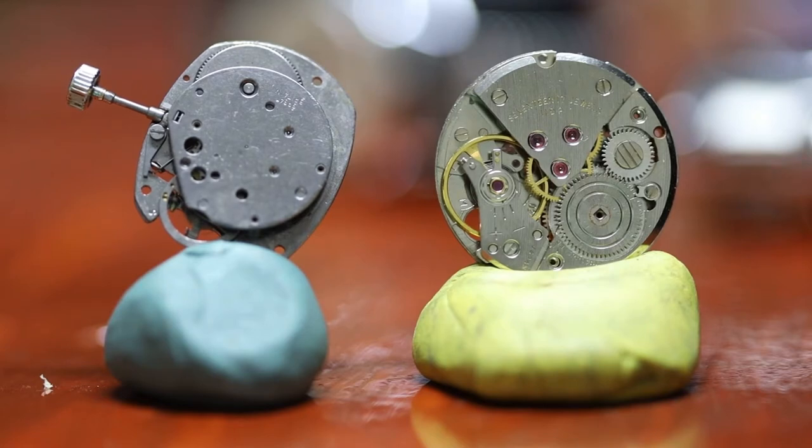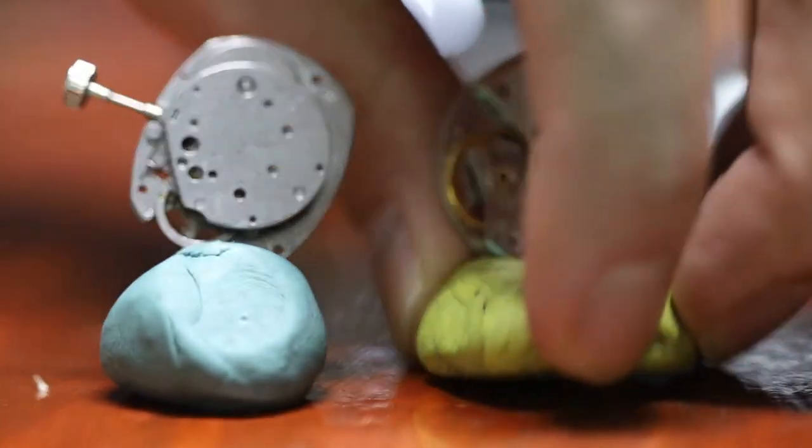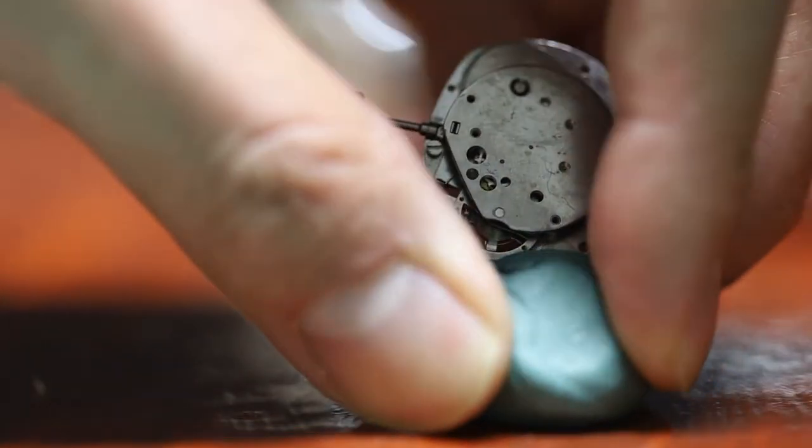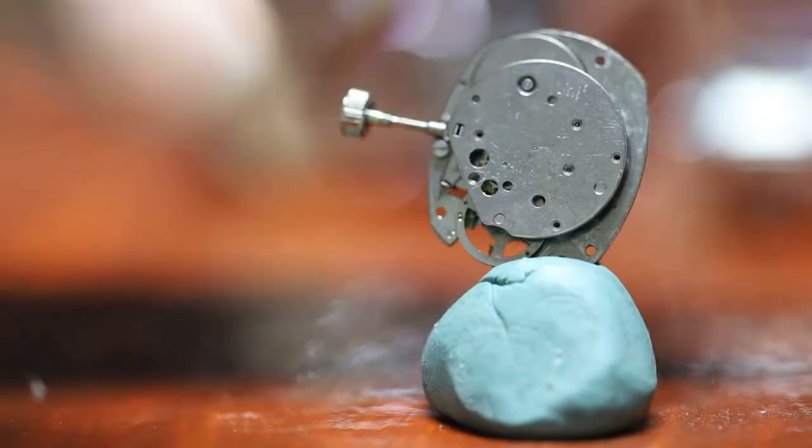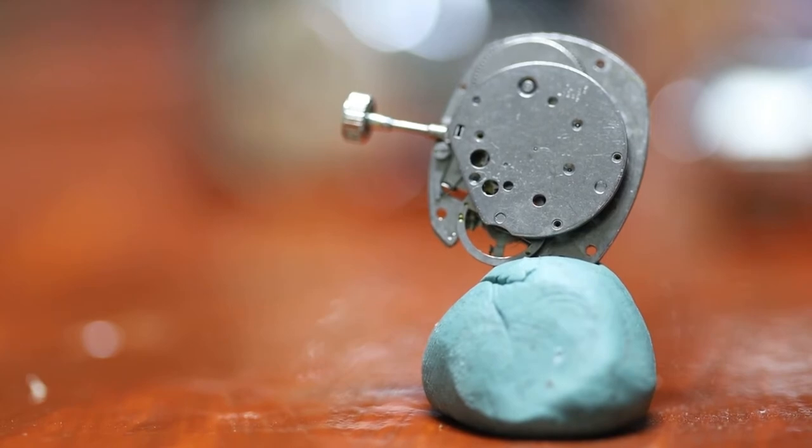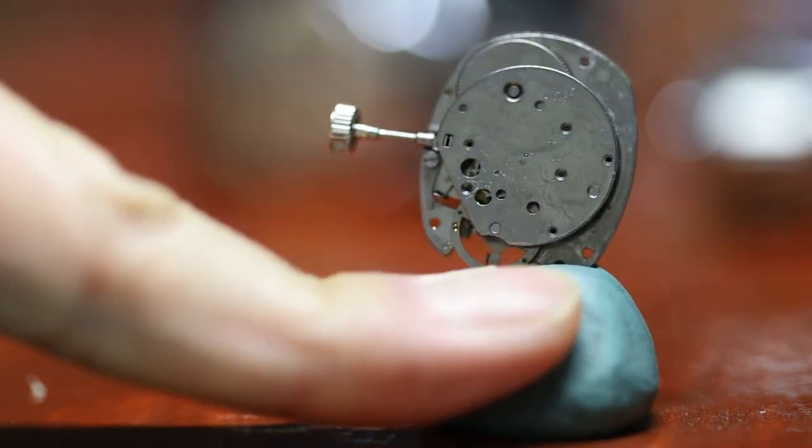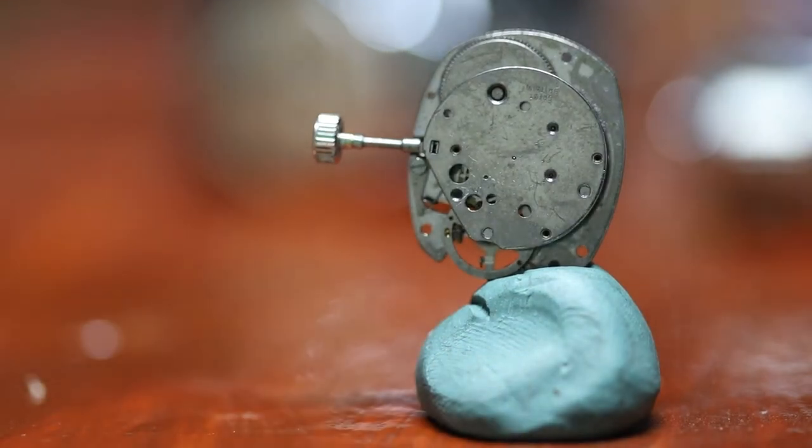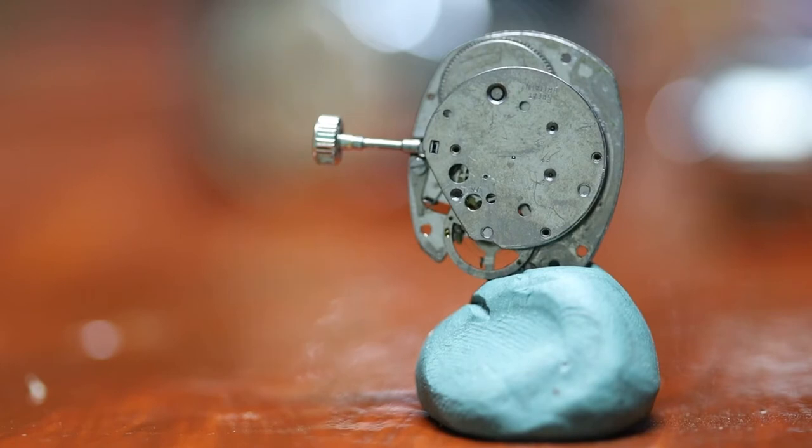Alright. So now that we have established the Caravelle is, in general, a superior watch technically, we're going to put the watch away and we're going to focus on the Timex and look at it from another perspective, where the Timex really shines is manufacturability and cost cutting to a degree that is kind of crazy. And we'll go over this and I'll essentially show you everything that I think that went into the watch that makes it just kind of a marvel of mass production.